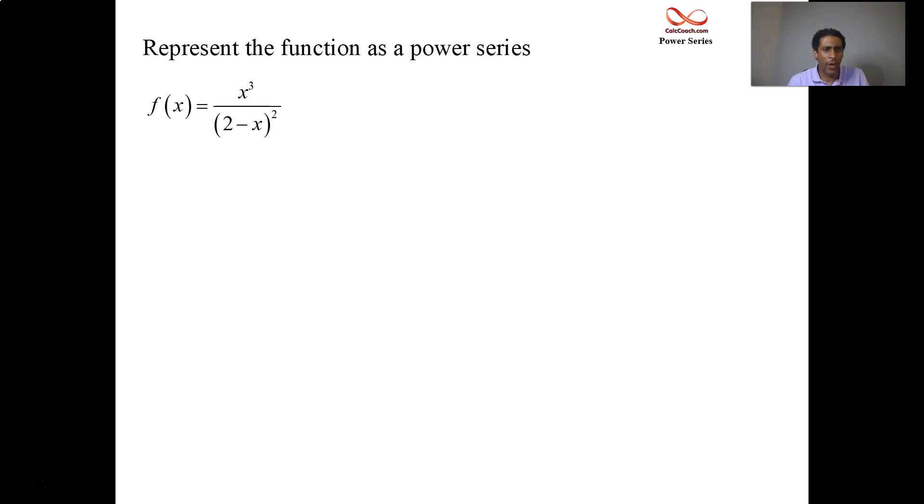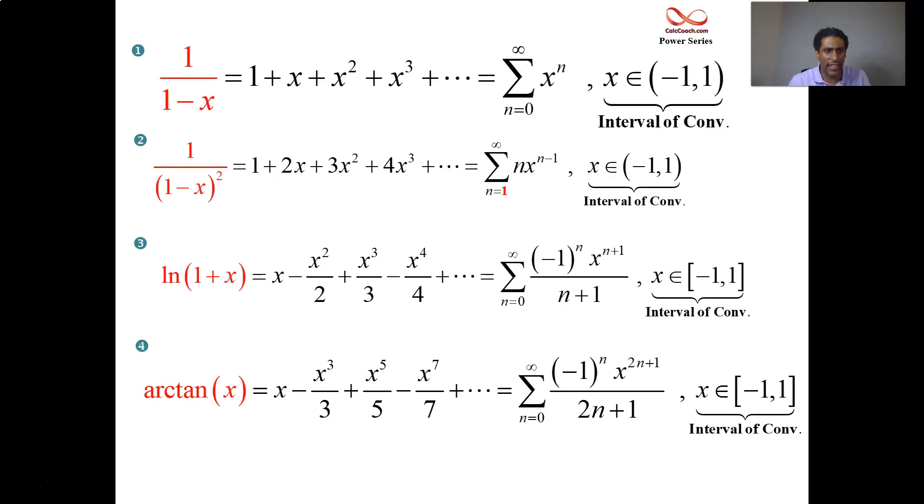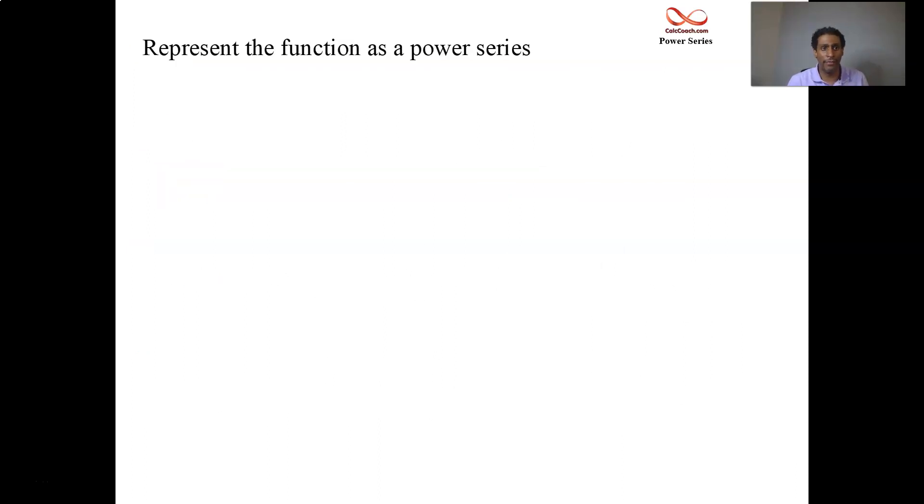If you have the quantity squared in the denominator, if you go back to the list, it's got to be the second one. Quantity squared in the denominator. Except you don't have a one in the numerator. You don't have a one in the denominator. What you have for your function, x cubed in the numerator, factor it out. Two in the place of the one that's in the denominator, factor it out.